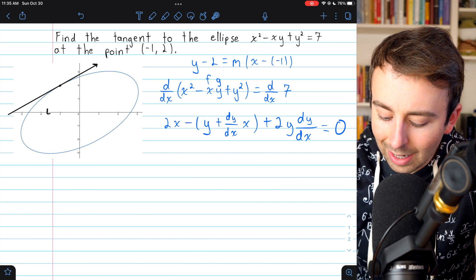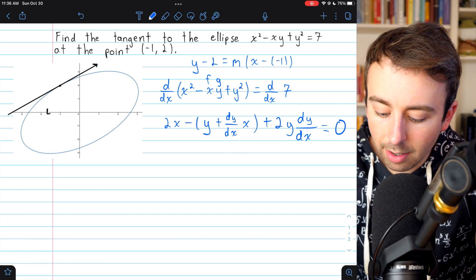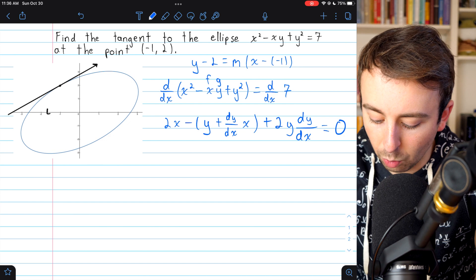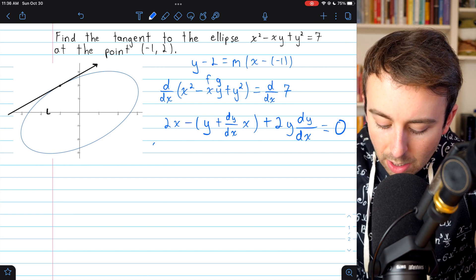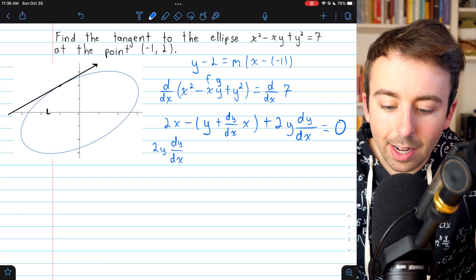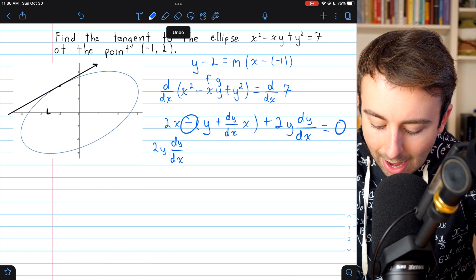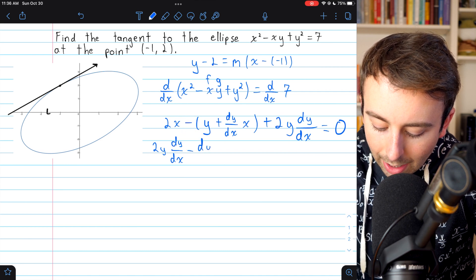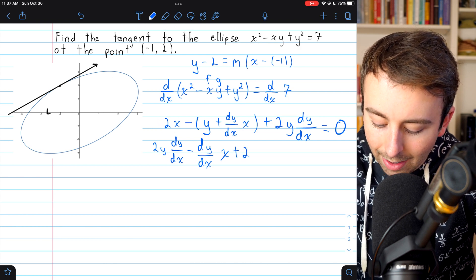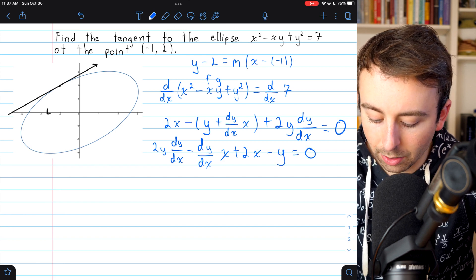Now we're almost done. All we've got left is to solve for dy/dx. First, I'm just going to reassemble the pieces of this equation. Let's bring the dy/dx terms together and bring everything else together as well. So first, I'll put this 2y dy/dx at the front of our equation. And then the only other dy/dx term we have comes from this minus times dy/dx times x. So that's minus dy/dx times x. Then we've got this 2x, so we'll add 2x, and we've got this minus y, so subtract y. And this all equals 0.